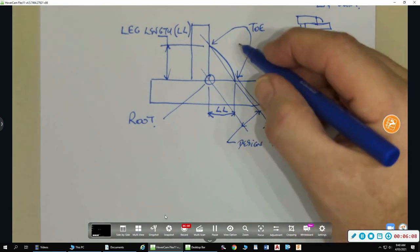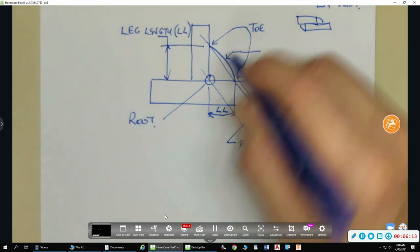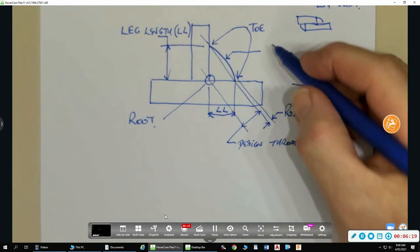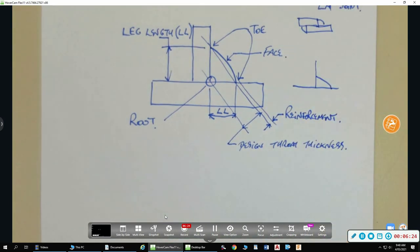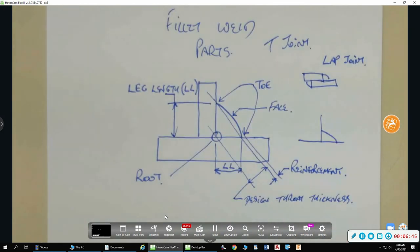And you can also put in here, just this one, pointing to there. Does anyone know what that one's called? Right at the top here. It's called your face. Okay. So, they're the parts of the fillet weld. They're the fillet weld parts.